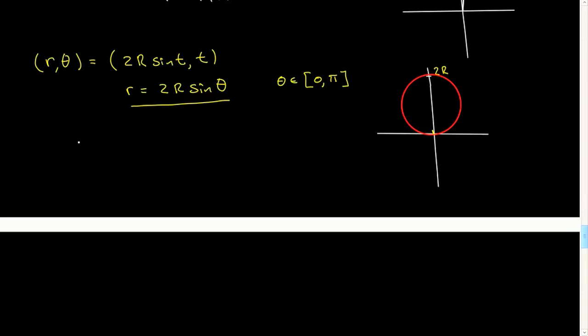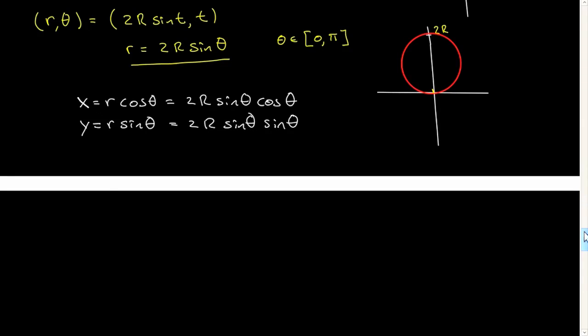So x is equal to, of course, r cosine theta and y is equal to r sine theta. But I know what r is. It's this. So I have 2r sine theta cosine theta. This is 2r sine theta sine theta. I'm going to get too messy here. So now you have to do some algebraic manipulation. And after you do the algebraic manipulation, let's go down here. You'll find that x is equal to r sine of 2 theta and y is equal to r times 1 minus cosine of 2 theta.